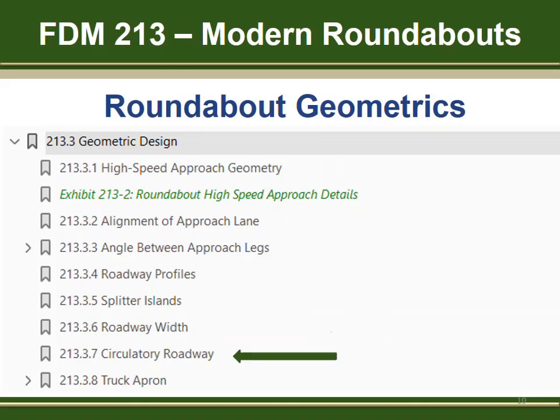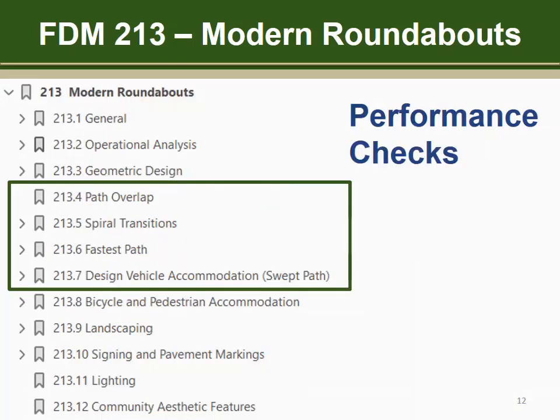FDM 213.3.7 provides guidance on lane widths within the circulatory roadway, which are most often based on the need of the design vehicle movements. FDM 213.3.8 adopted details for the truck apron; this is not changed from the 2018 FDM. Following the geometric design section are four sections that are various performance checks, assuring that a good design is achieved.